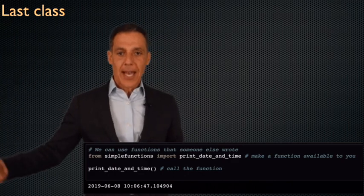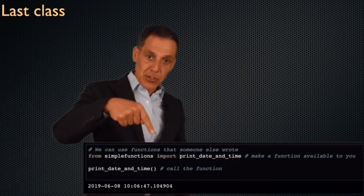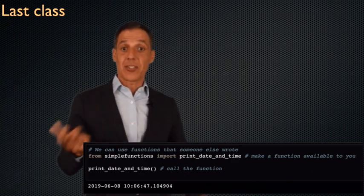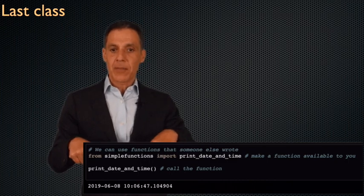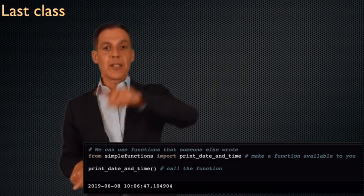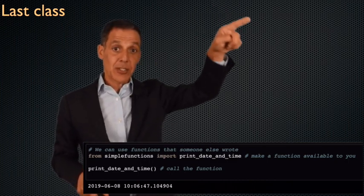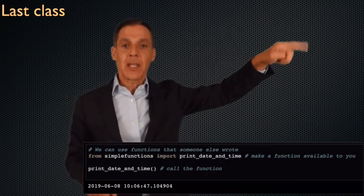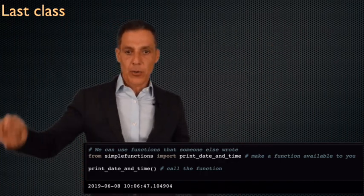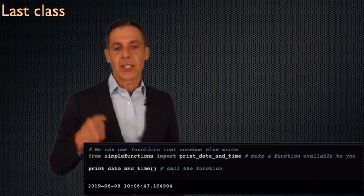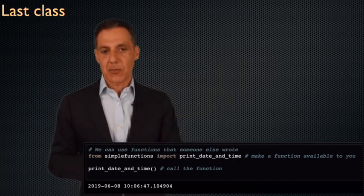So then I get to call that function print_date_and_time, and there you do see the parentheses because now I'm making a function call. At that point, it will go into the file simple_functions, find where it says def print_date_and_time, execute the body of the code, and of course it prints, as promised, the date and the time by tapping into a system clock.